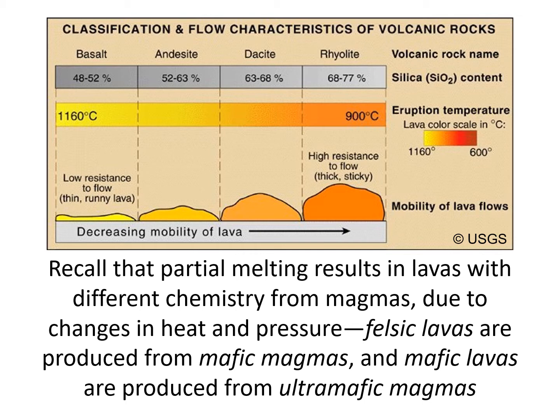If a volcano has an ultra-mafic magma — almost entirely 100 percent mafic mineral composition — it will produce a mafic lava. On this chart, mafic lavas tend to form at around 1,160 degrees Celsius, which is thousands of degrees Fahrenheit — very hot lava. On the other hand, if a volcano's magma chamber has a more intermediate composition, the resulting eruption can produce felsic or intermediate lavas like rhyolite, which develop at lower temperatures.